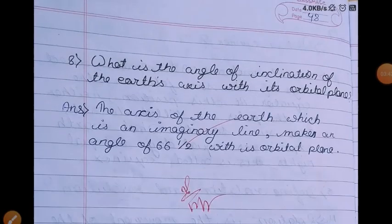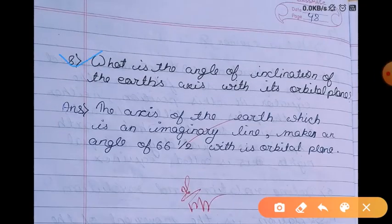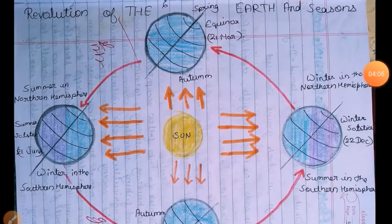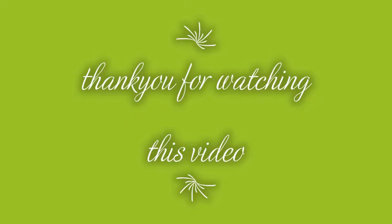Question Number 8: What is the angle of inclination of Earth's axis with its orbital plane? The axis of Earth, which is an imaginary line, makes an angle of 66 and a half degrees with its orbital plane.